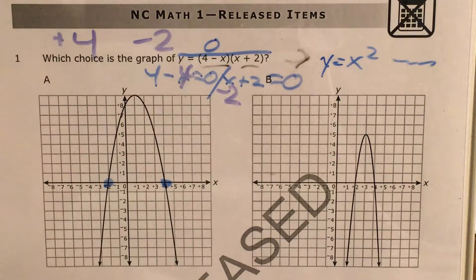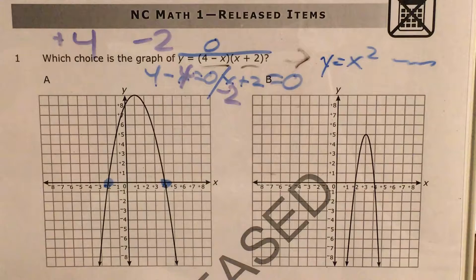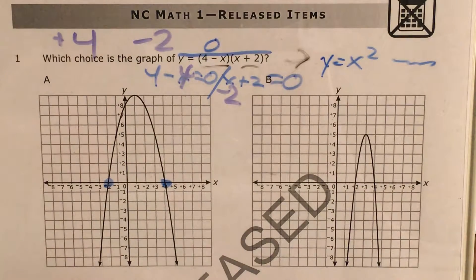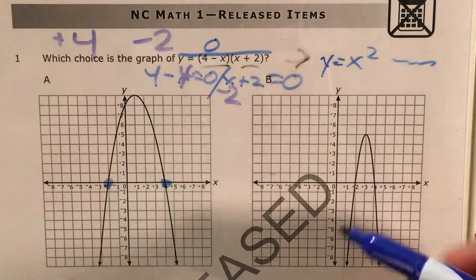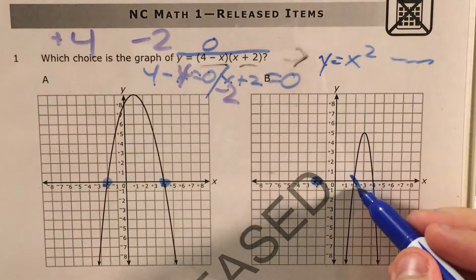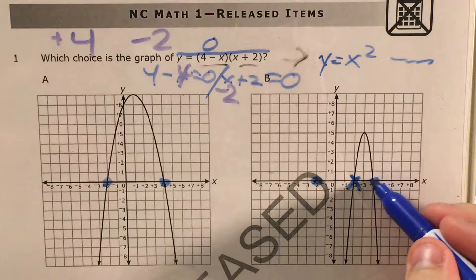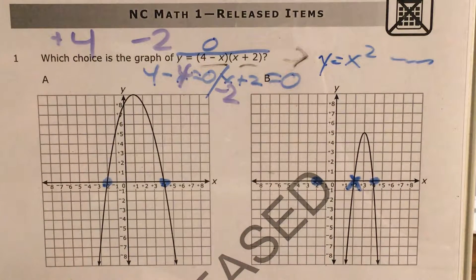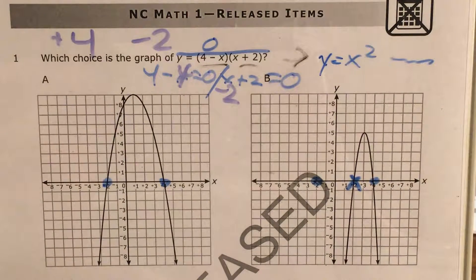Now, there's other things to consider here, so I'm not going to just assume that choice A is my answer. Instead, I'm going to look at choice B. And I look for 0 at negative 2, and there's none. Oh, there is one at positive 2, though, but that's not the one we want. And even though there's one at positive 4, this isn't going to work for us.